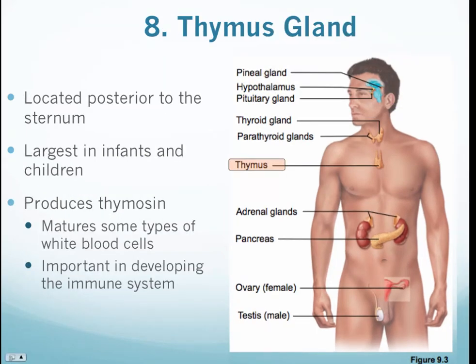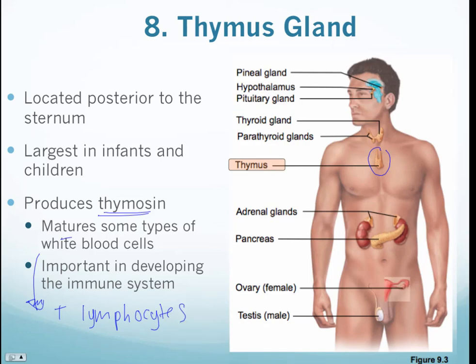The thymus gland is posterior to our sternum. It produces thymosin, which aids in the maturation of some types of white blood cells — specifically T lymphocytes. These are specific white blood cells used for our adaptive immune response, which is why the thymus is important for developing our immune system. In AIDS patients, the virus targets these T cells.